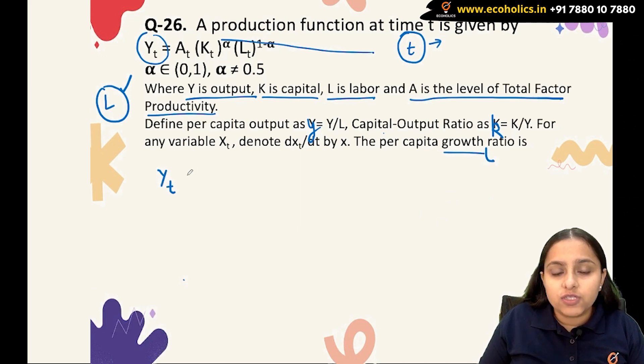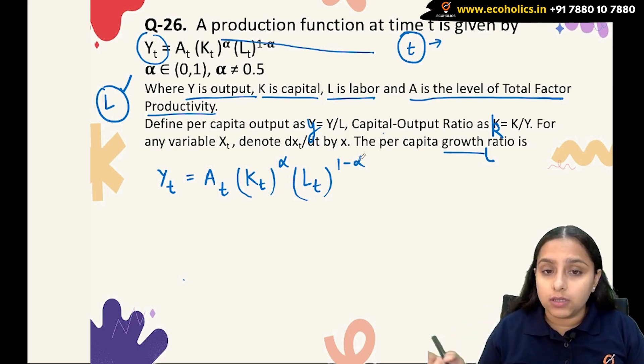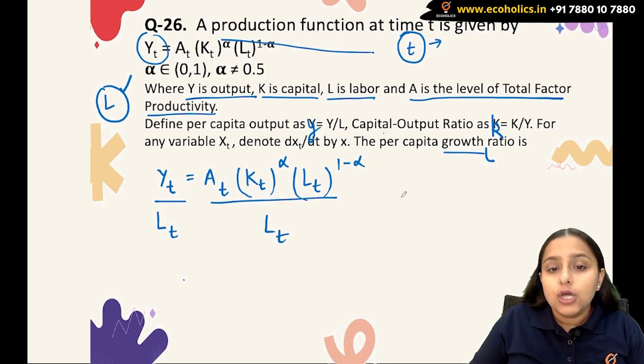To do this, we will first write our production function: Y_t = A_t(K_t)^α(L_t)^(1-α). Since I want the results in per capita terms, I will divide by labor on both sides. This will give me per capita output.